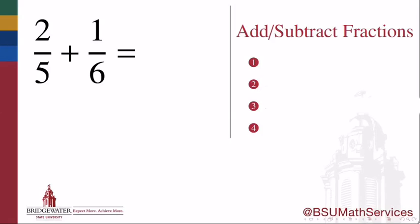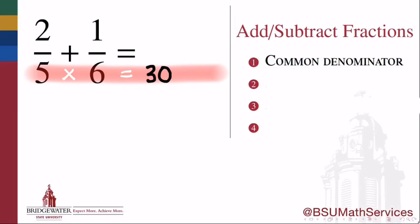First of all, to add or subtract fractions, you absolutely need a common denominator. So to add 2/5 plus 1/6, I'm going to put each fraction into a denominator which is a common multiple of both 5 and 6.